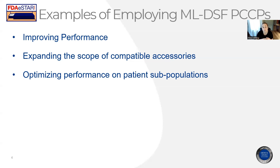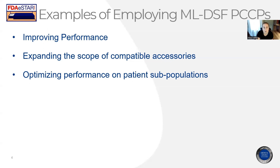The last example is if you intend to optimize performance on a patient subpopulation. That could be if you have a specific group where you want to improve specific performance, but you might not have the comprehensive data set yet. Once you have that data, you can expand your claims to those specific subpopulations, and you could clear that through the FDA in a PCCP as well. Those are just a few examples — the guidance document lists a couple more — but basically those are all changes that would normally require a new submission, but you would be able to get pre-authorization for through a PCCP.